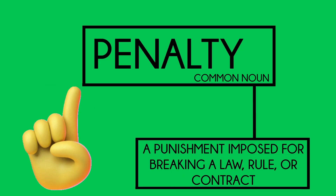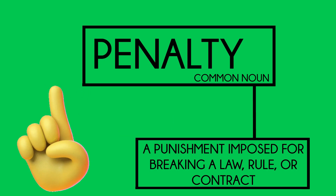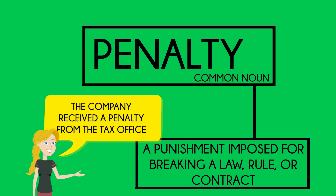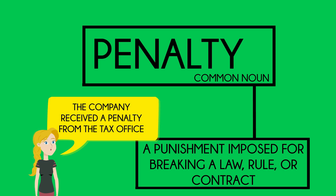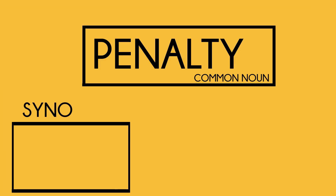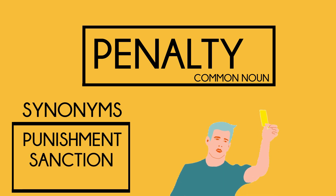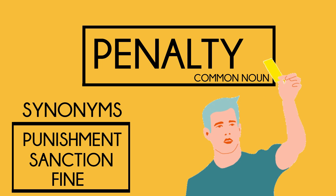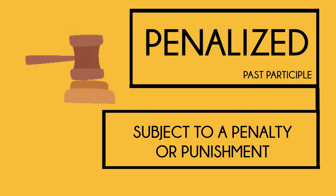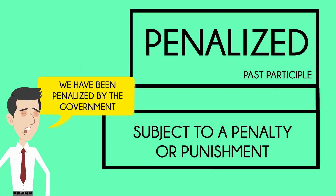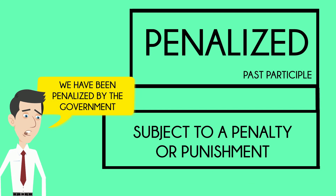Our next word is the common noun 'penalty'. The definition of penalty is a punishment imposed for breaking a law, rule, or contract. Example: the company received a penalty from the tax office. Synonyms often used instead of penalty are: punishment, sanction, or fine. Related to this word we also have the past participle 'penalized', meaning to be subject to a penalty or punishment. Example: we have been penalized by the government.